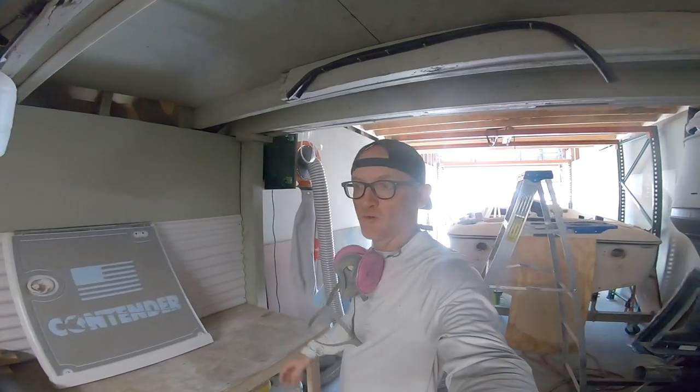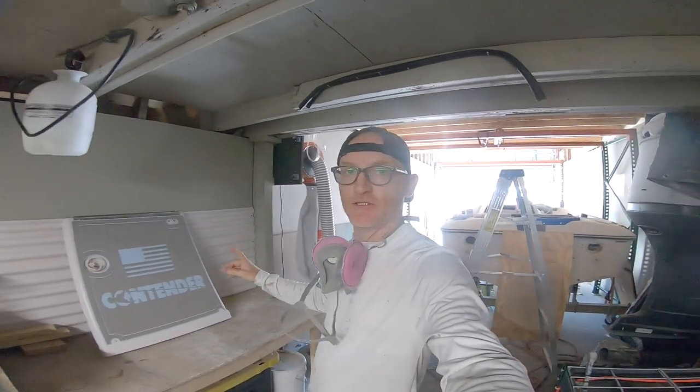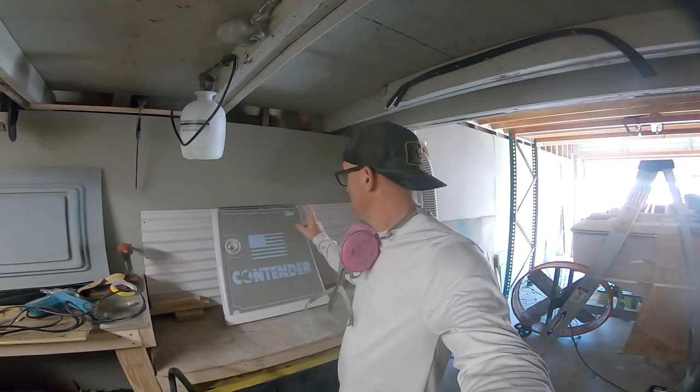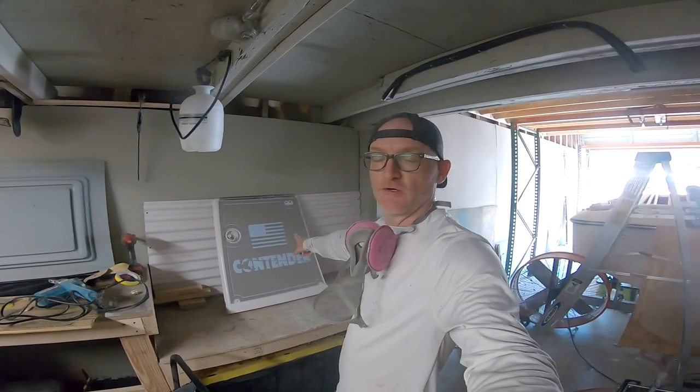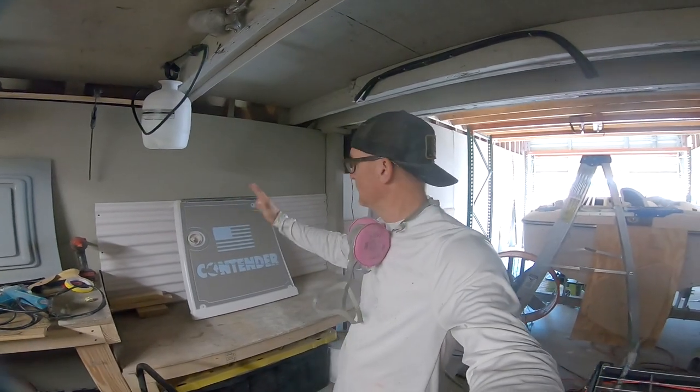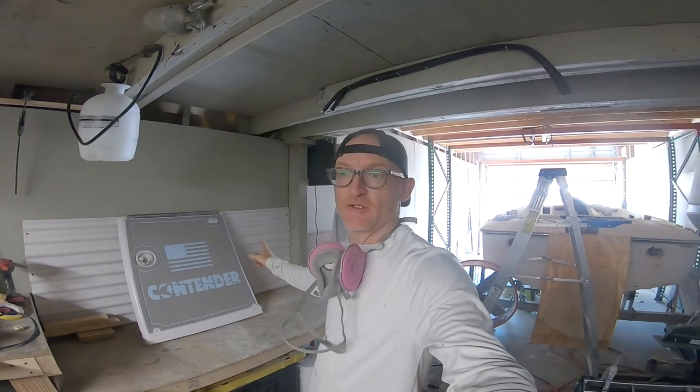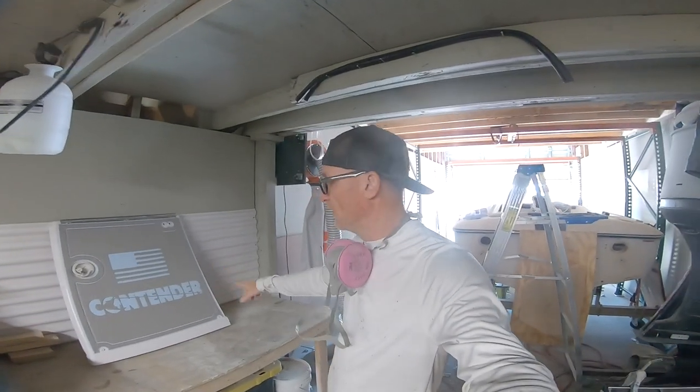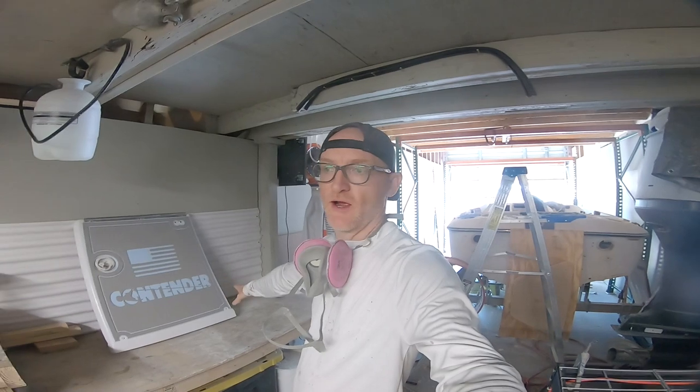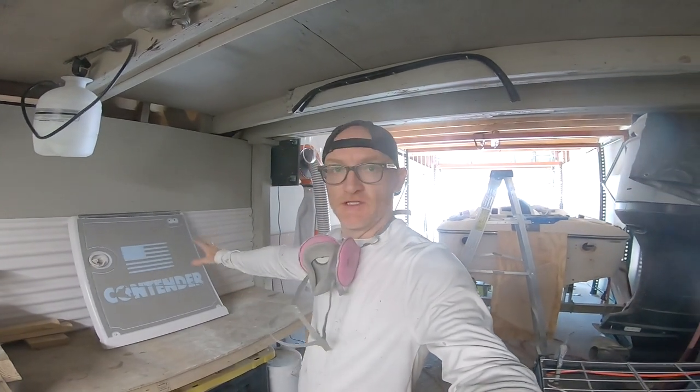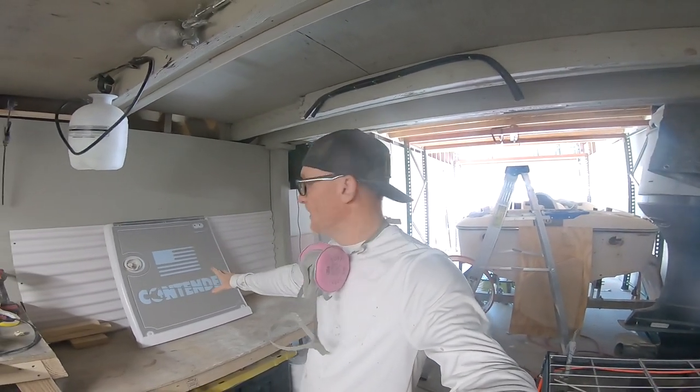What's up guys, Russ from Backyard Boatworks. So I'm at my shop today and I decided to do a short video on this here. This is a Contender hatch that covers the front of the console. It flips open. It's a neighbor of mine actually. I've done a little bit of work on his boat but he's got some cracking in the corner of this cover and we're going to fix it and patch it up.